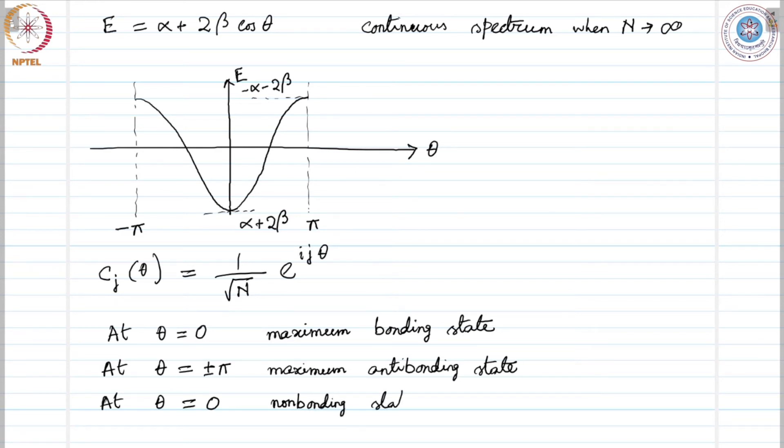If this is the spectrum in terms of θ, can we find out the density of states for this kind of a system?